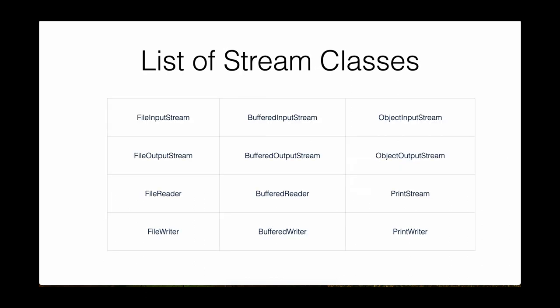This slide shows the main basic IOStream class names. We have: FileInputStream, FileOutputStream, FileReader, FileWriter, BufferedInputStream, BufferedOutputStream, BufferedReader, BufferedWriter, ObjectInputStream, ObjectOutputStream, PrintStream, and PrintWriter. Don't worry if you don't recognize these class names — by the end of this video you will have a good idea of what each class does.